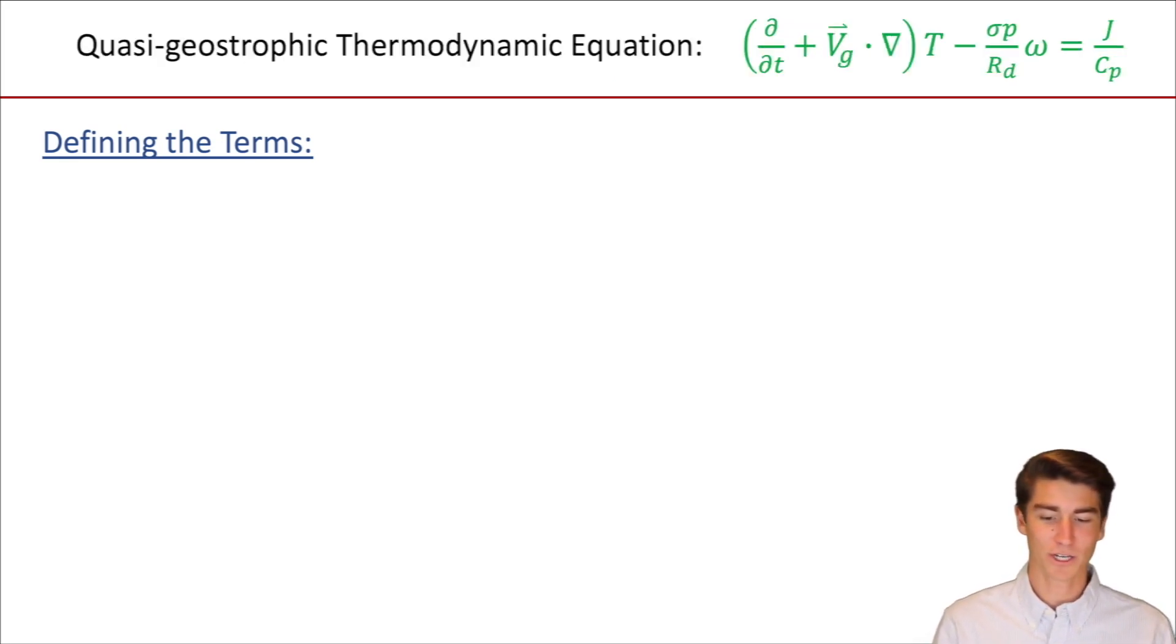So it's all these different aspects that change the temperature of our air parcel. That's the basic form of the equation. You'll often see the quasi-geostrophic thermodynamic equation. And it's basically the same thing. All the terms pretty much mean the same thing, but with two variations. You see our V is now Vg, and that means geostrophic wind.